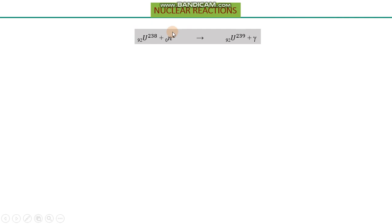Now moving to nuclear reactions. In chemical reactions, as the name indicates, the nucleus is not involved — bond breaking and bond formation occur. In a nuclear reaction, there is no bond formation or bond breaking; instead, the nucleus itself is involved.